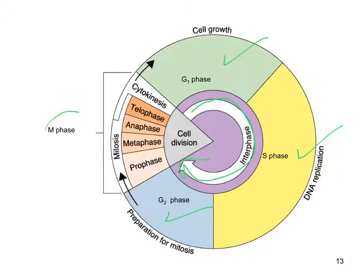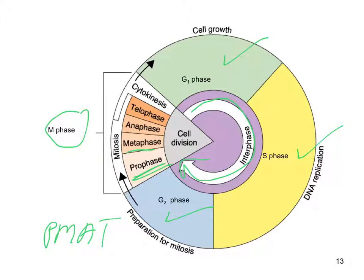Then we move into the M phase, which is where mitosis takes place. Mitosis has its own stages, which can be memorized with the acronym PMAT: P standing for prophase, M for metaphase, A for anaphase, and T for telophase.